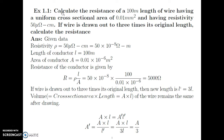In the first numerical, calculate the resistance of 100 meter length of wire having a uniform cross sectional area of 0.01 millimeter square and resistivity of 50 micro ohm centimeter. There are two parts: first, calculate the resistance with length 100 meter, 0.01 mm² cross sectional area, and 50 micro ohm centimeter resistivity.